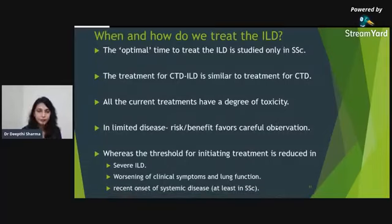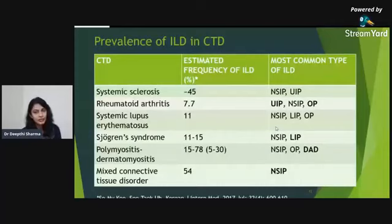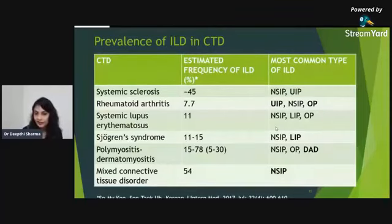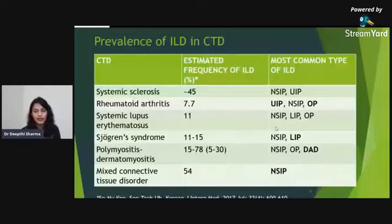Regarding prevalence: 45–50% of systemic sclerosis patients develop some form of ILD. The most common ILD pattern in CTD is NSIP — except in rheumatoid arthritis, where UIP is more common, affecting 7–10%. SLE causes pleuro-parenchymal manifestations in 11–12%. Sjögren's syndrome affects about 15%. Polymyositis/dermatomyositis has higher rates in Southeast Asian patients, up to 70–78%. MCTD has NSIP in 50–60% of patients.